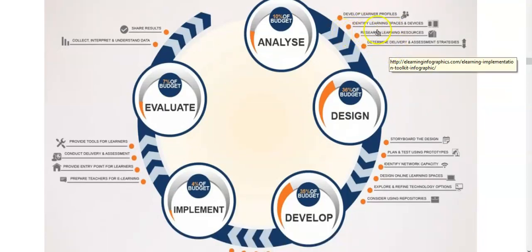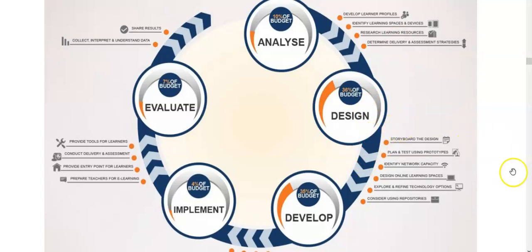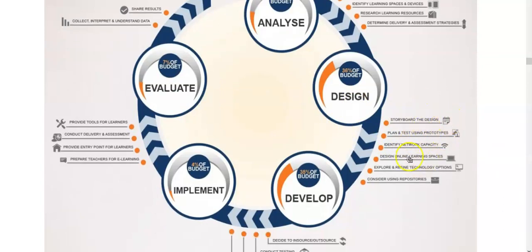It has 'identify learning spaces and devices.' We need to look at what spaces we have available. I think this is an issue at my college because the number of computers available compared to the student population size is inadequate, so students are using their cell phones a lot to gain access to online content. In this analysis, we have to ensure that once we get to the design segment, it is designed in such a way to allow convenient mobile access, and the design incorporates those types of factors.